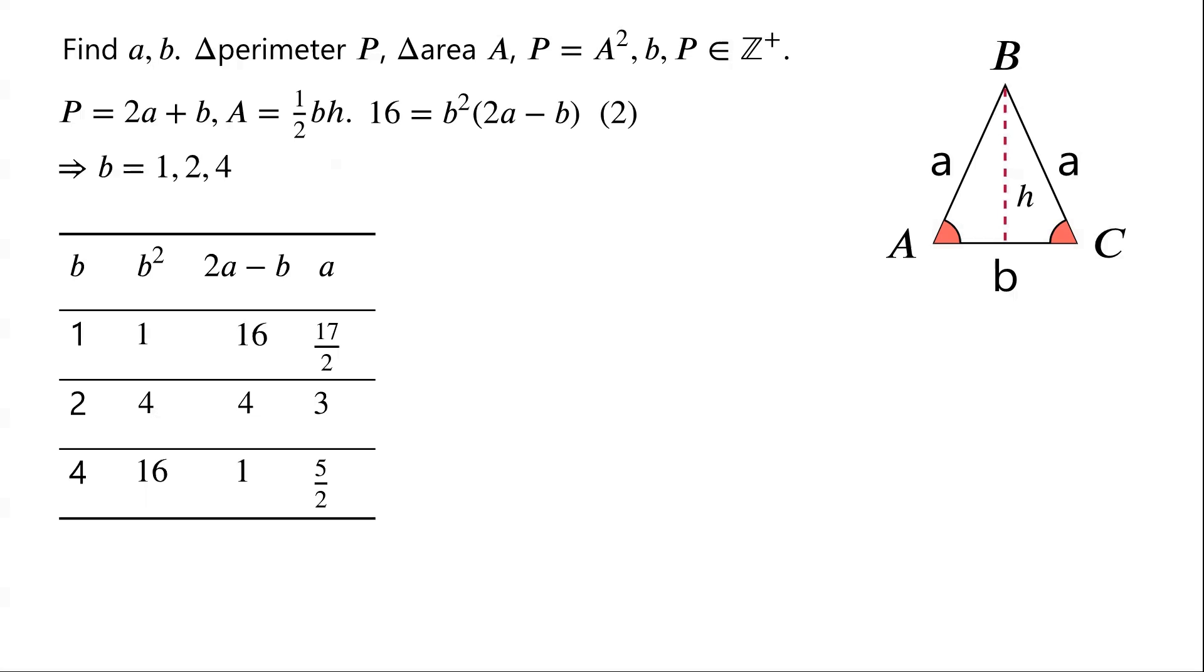We have found 3 pairs A, B, which are 17 over 2, 1; 3, 2; and 5 over 2, 4. It's not difficult to verify that all 3 pairs A, B are solutions.